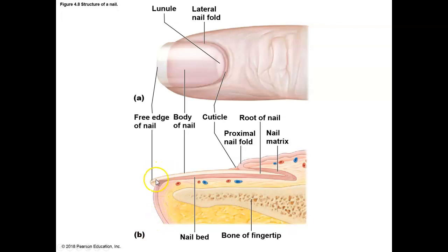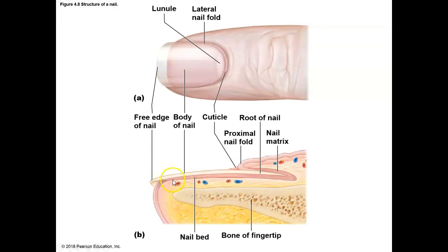All this nail is dead tissue, but if your nail gets peeled off — say something bends your nail back — that hurts, because the tissue beneath is living and connected to the nail. When you bend the nail it pulls that living tissue, and that can hurt a lot.